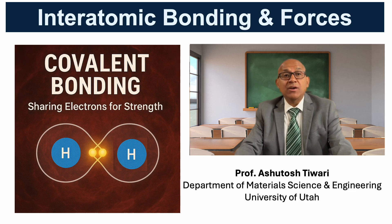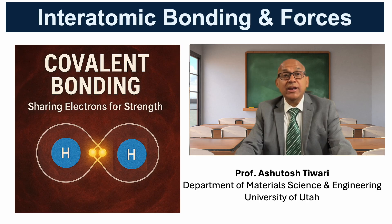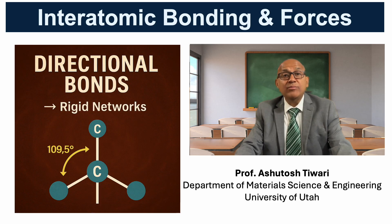Covalent bonding occurs when atoms share electrons in order to fill their outer shells and achieve stability. Unlike ionic bonding where electrons are transferred, here they are shared. Covalent bonds are directional, meaning they form along specific orientations in space.